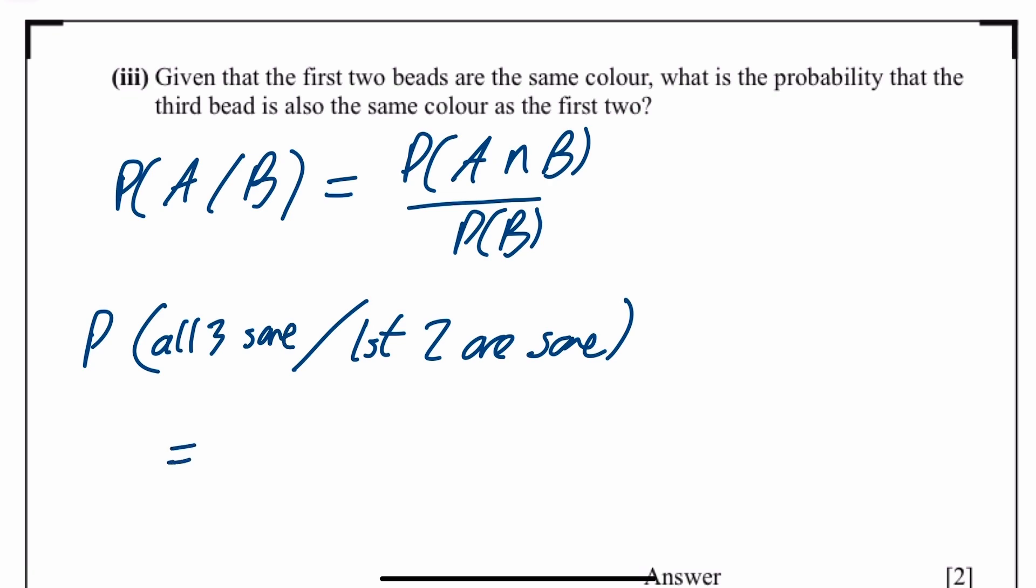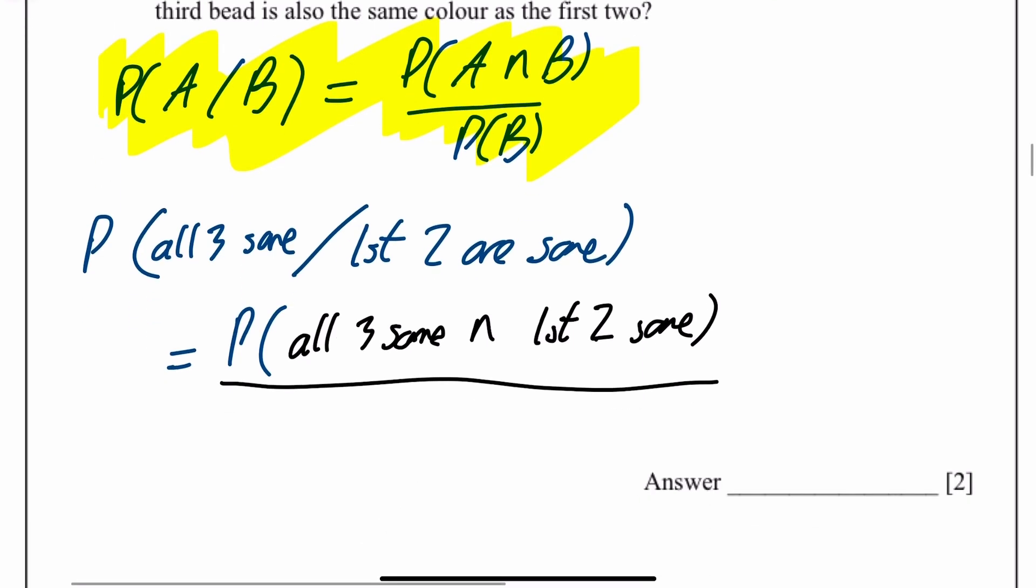What that means then, using this definition for conditional probability, you've got to have all three the same on the top and the first two are the same. And we'll think about that in a second, what that means. And then that's divided by the probability that the first two are the same.